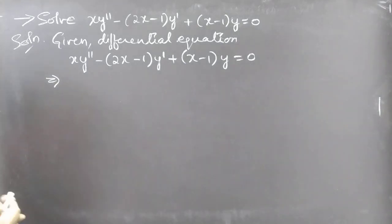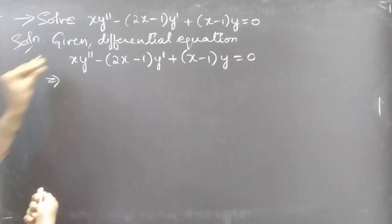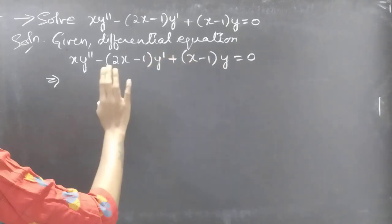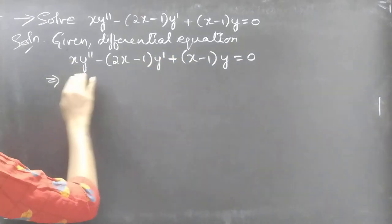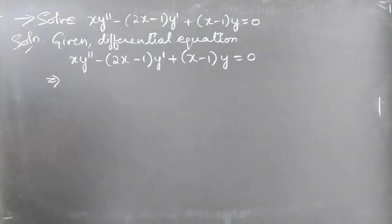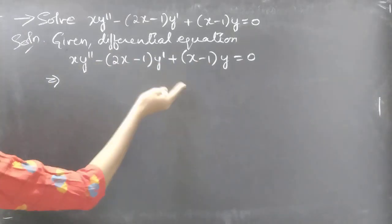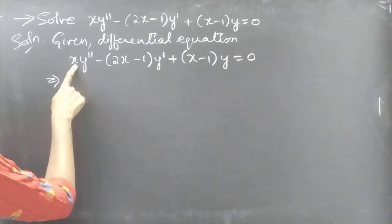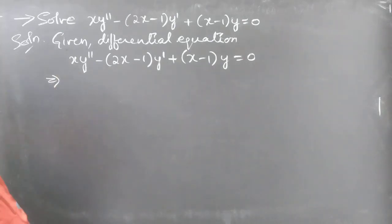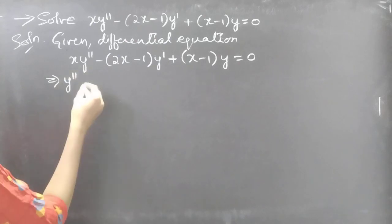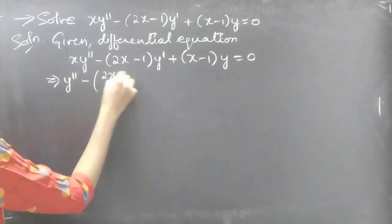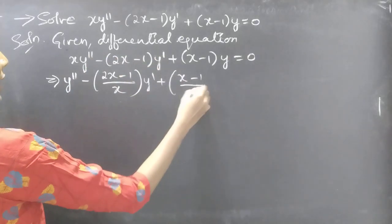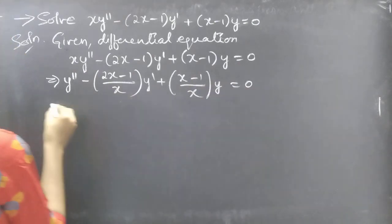We need to write the given differential equation in standard form. For that, we need to make the coefficient of y'' equal to unity. So we divide the whole equation by x — that is, multiply by 1/x. This equation becomes y'' − [(2x−1)/x]·y' + [(x−1)/x]·y = 0.